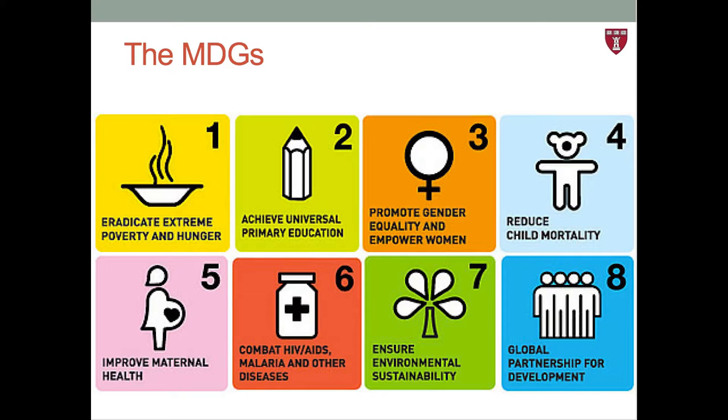The MDGs were also critiqued for a number of reasons. Many felt they were not written with adequate transparency or inclusion of various stakeholders, resulting in a relatively narrow set of goals that did not include other important issues such as non-communicable diseases. They focused largely on mortality and infectious disease, and many felt they did not adequately target conditions with significant morbidity. Nonetheless, all UN member states agreed to the MDGs, and they had a significant impact on health globally as well as political collaboration for poverty reduction worldwide.